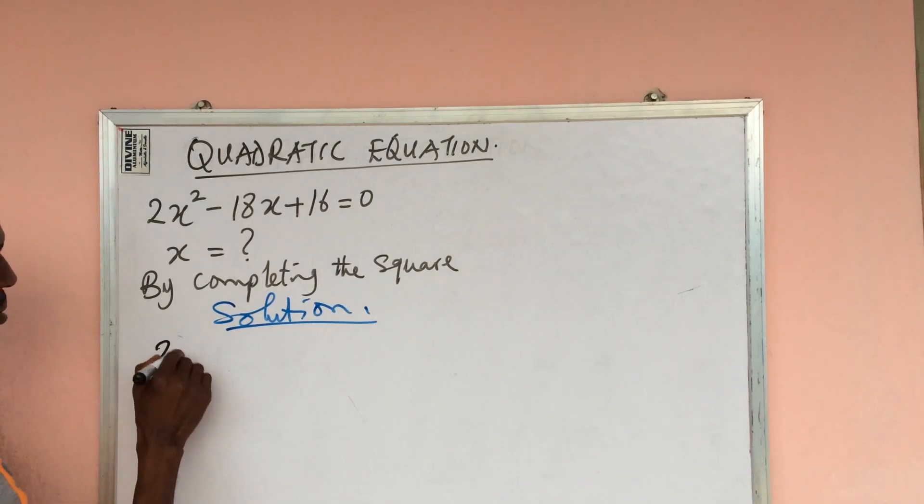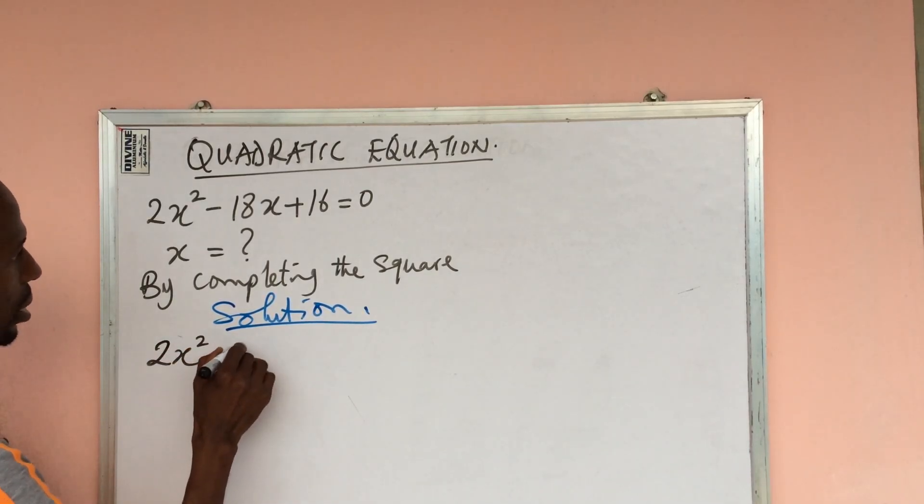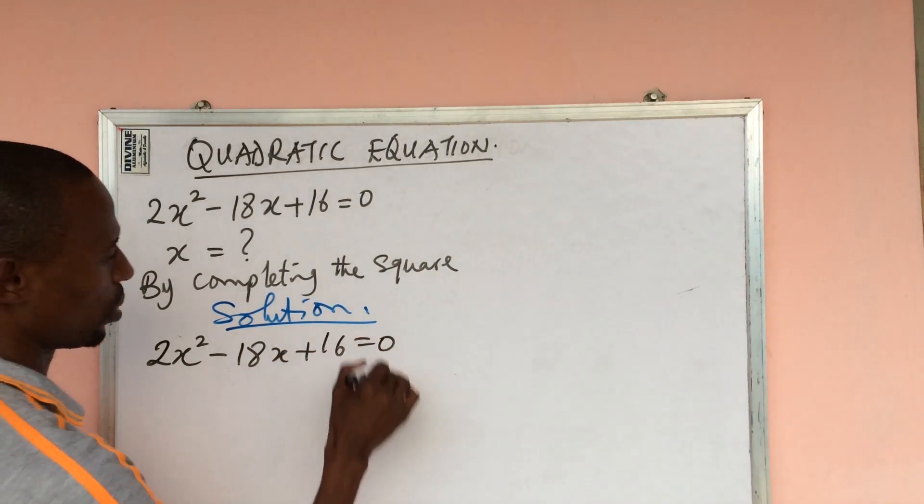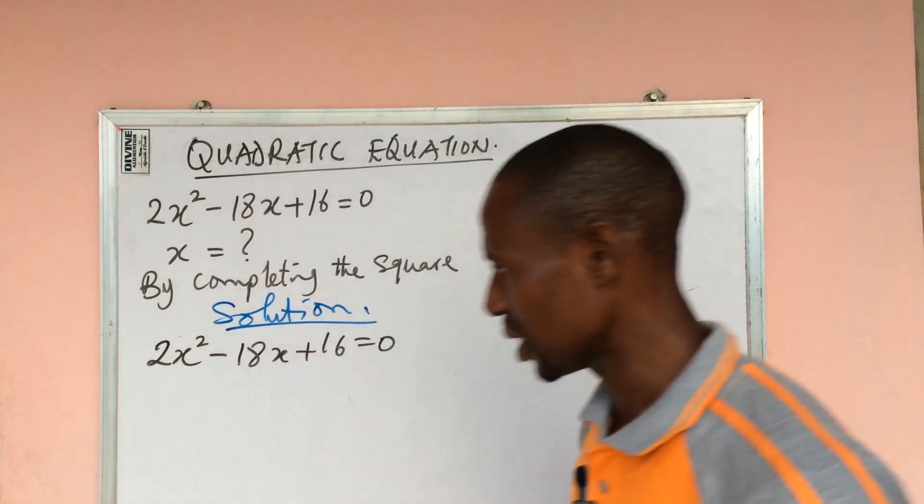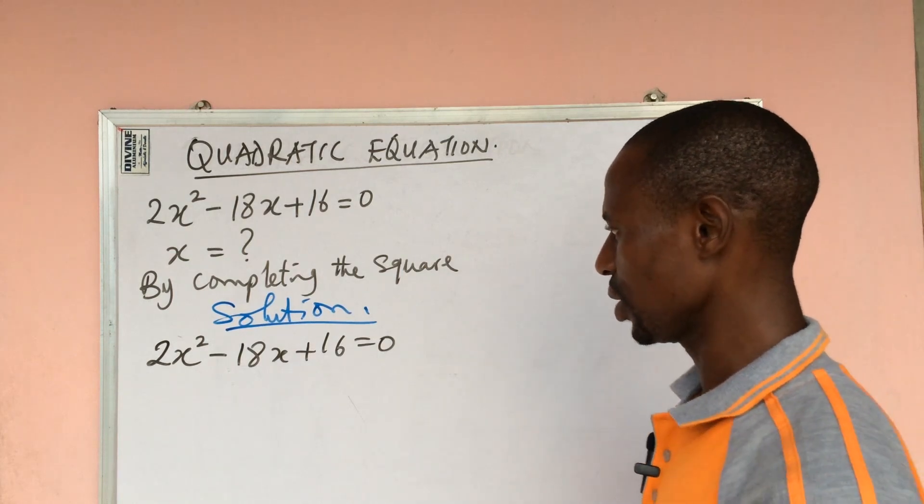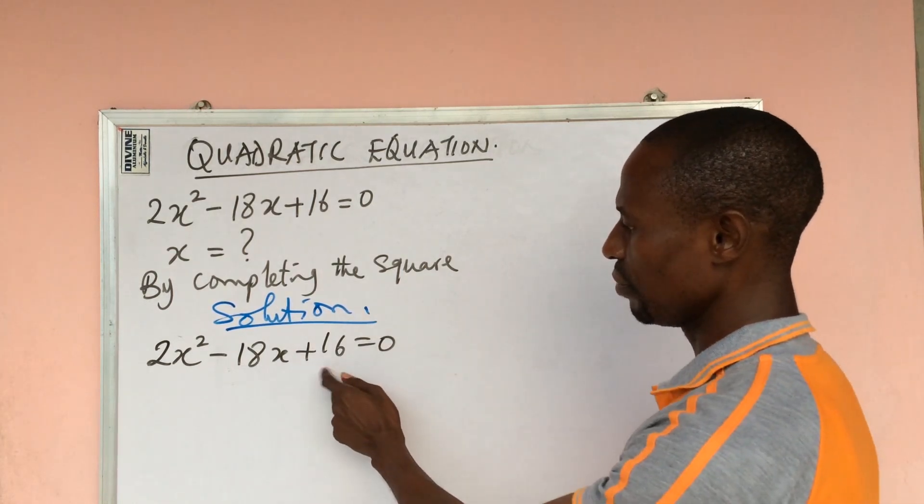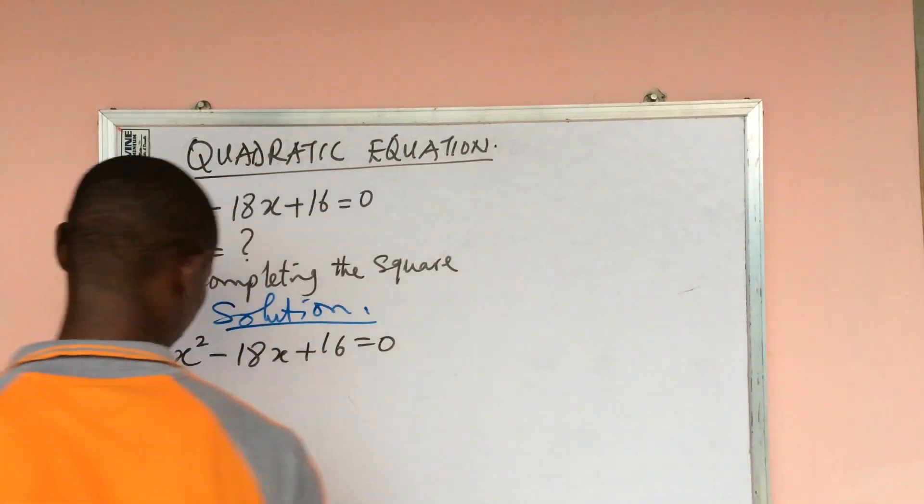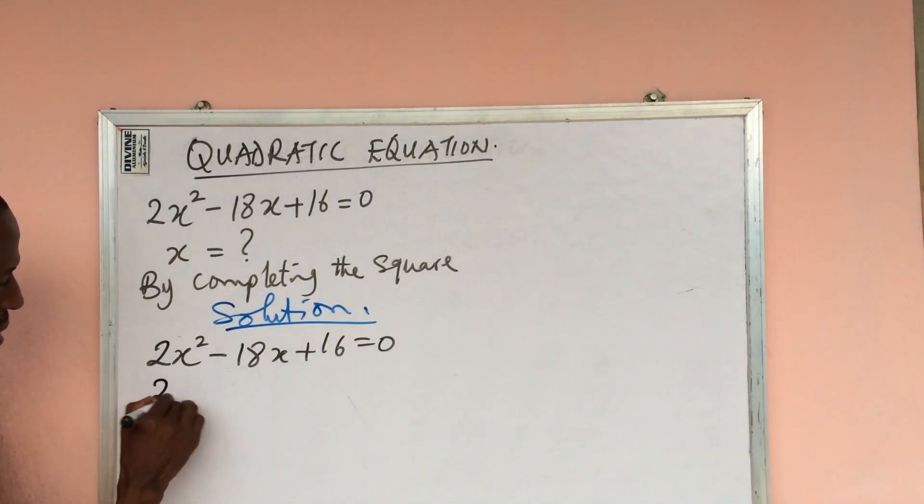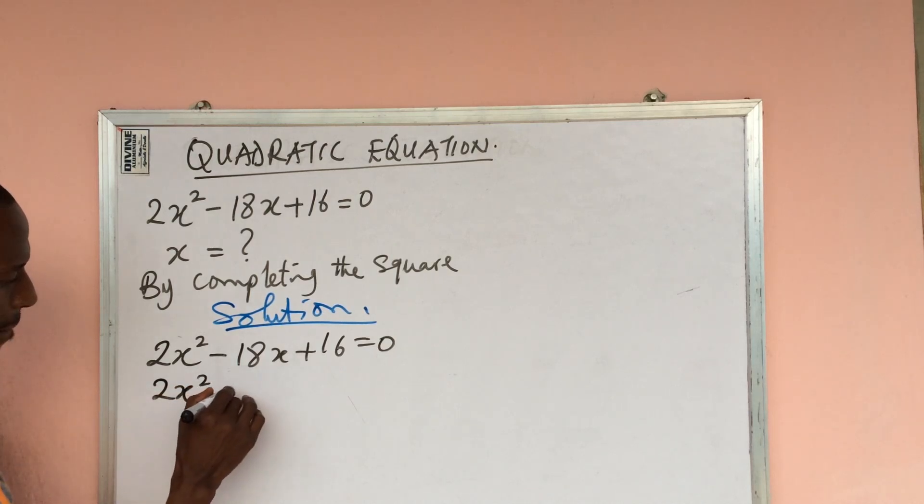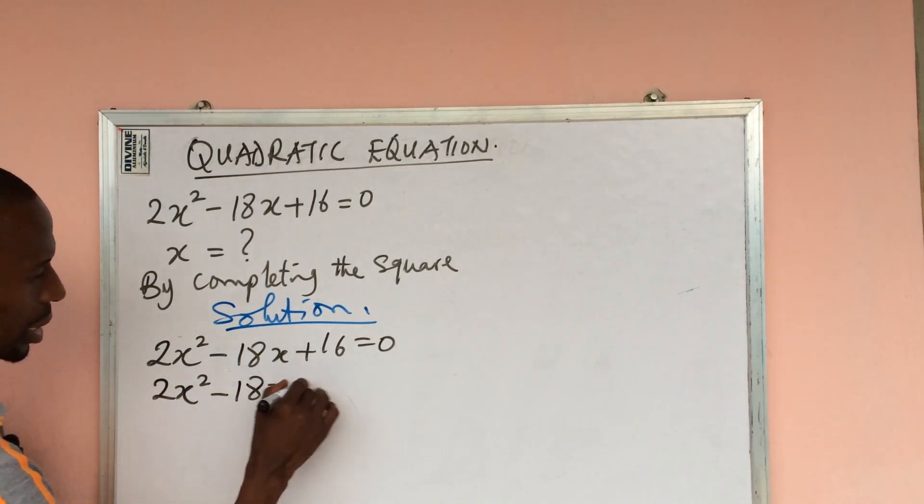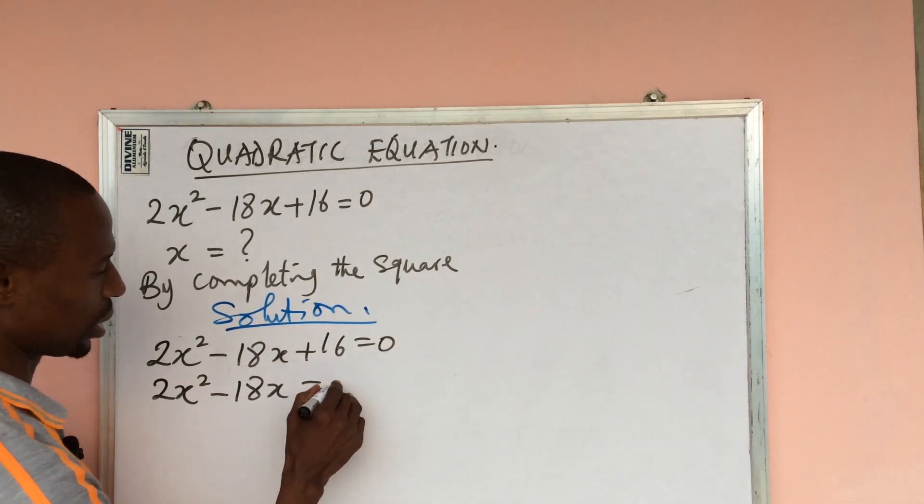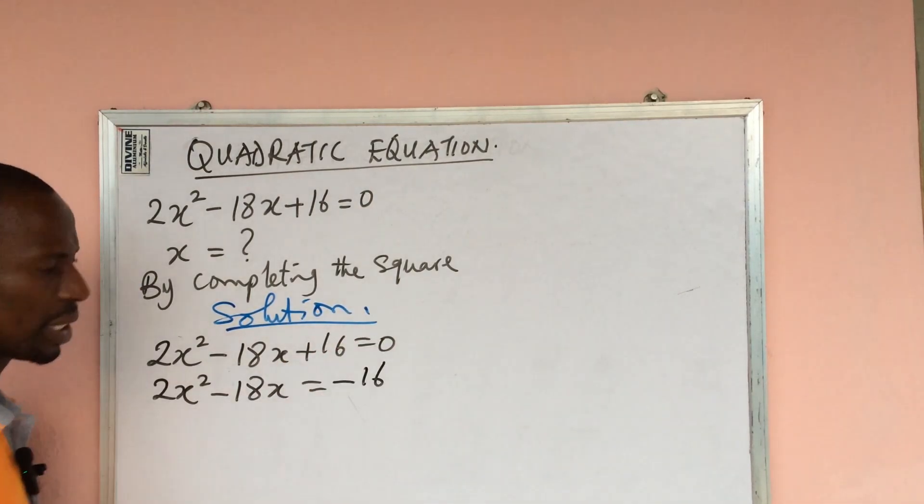This is 2x² - 18x + 16 = 0. Now in completing the square method, the first thing you do is to move the constant term to the right hand side. So let's take this to the right hand side. This will now become 2x² - 18x = -16.